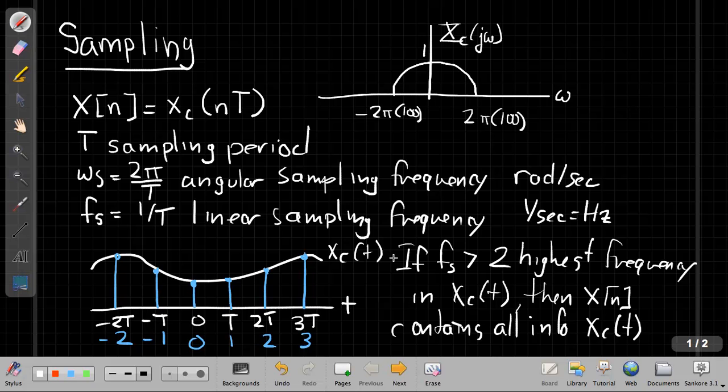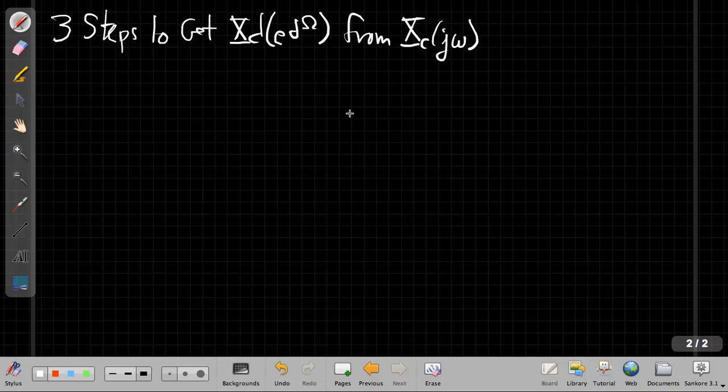I was going to use this signal up here. I'll just draw it again on the next page. An example of how do we get from this spectrum from one to the other. We went through this in class, and there's sort of three steps to get the discrete-time Fourier transform from the continuous-time Fourier transform when sampling.